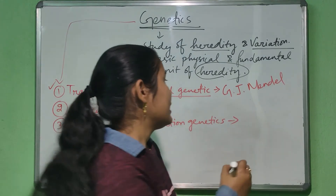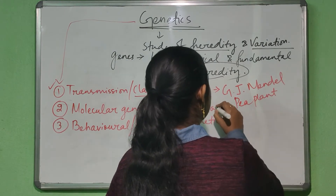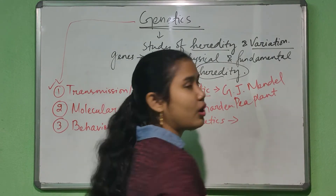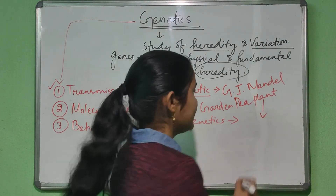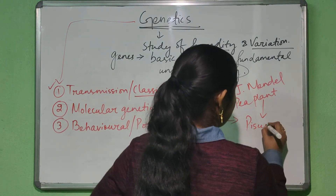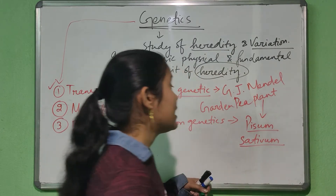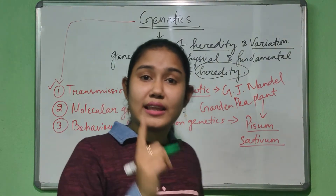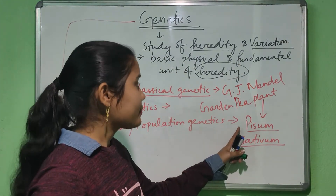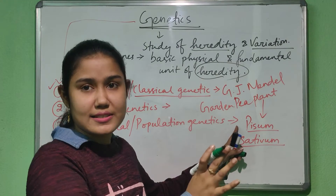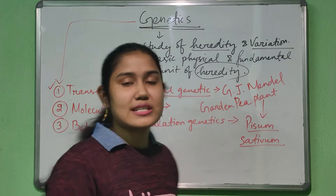He studied the pea plant — not the sweet pea. The scientific name of the garden pea plant is Pisum sativum. The sweet pea is Lathyrus odoratus. But Mendel studied and proposed the principles of classical genetics based upon Pisum sativum, that is the garden pea.